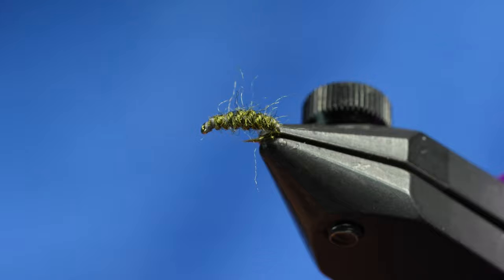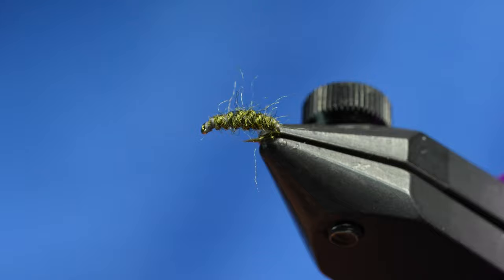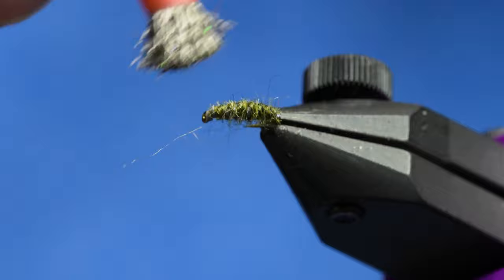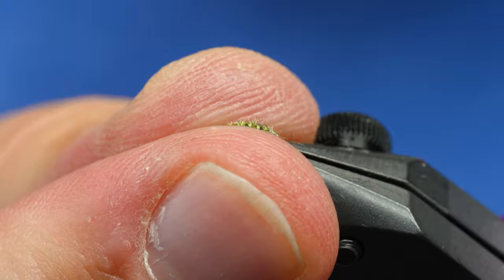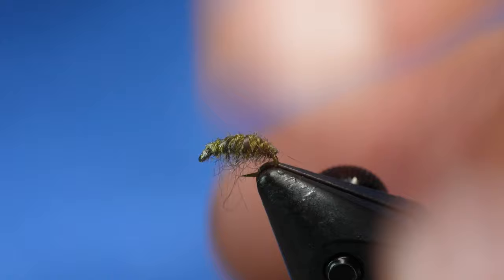Just two other little things we're going to do to this. First thing is we're going to come in here and pick it out and brush some fibers down, just like you do on most scuds. On the bottom of the fly, you can see some legs, and on the top of the fly, you see some ribbing.